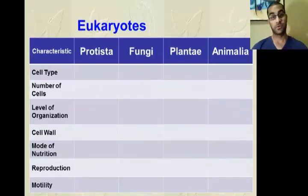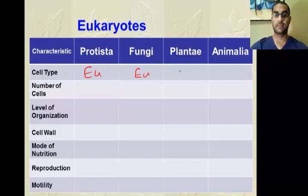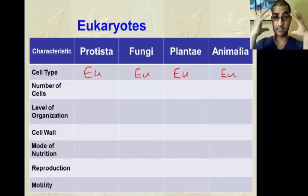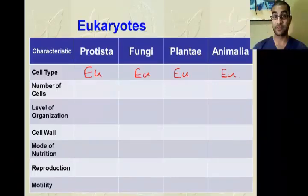Everything else is eukaryotic. The two prokaryotic kingdoms have no nucleus, no organelles — they're very simple, very small, very basic, and haven't needed to develop a nucleus because activity inside is pretty low. Now compare that to our eukaryotic kingdoms. All four — Protista, Fungi, Plantae, and Animalia — are eukaryotic, meaning every cell has a nucleus and organelles. They're significantly larger and more complex, so they need to protect their DNA with a nucleus.